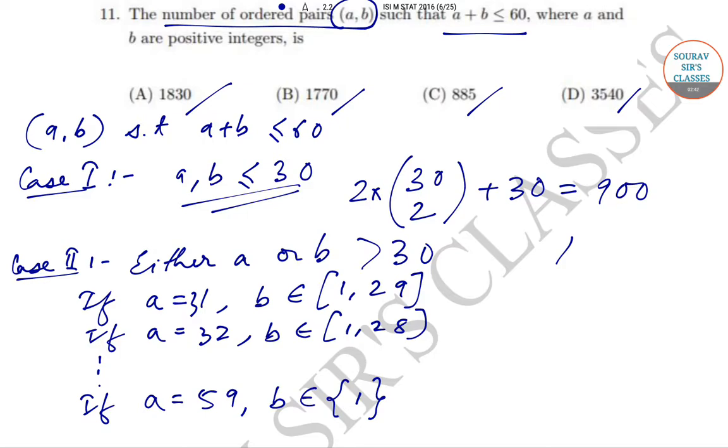So the number of combinations in this case will be 29 from here, 28 in the next case, and it will go down to 1, and that sum is equal to 870.